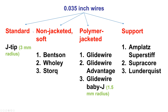There are four categories of 0.035-inch wires used to navigate from the periphery to the aortic cusp. First, there is the standard J-tip wire, which typically has a 3 mm radius. Second, there are soft non-jacketed wires such as the Benson, the Wholey, and the Storq, which are atraumatic and can advance through areas of tortuosity. Third, there are polymer-jacketed wires such as the GlideWire and GlideWire Advantage, or the Baby J for radial axis which has a tighter distal radius — very useful for tortuosity or significant lesions, although they carry a slightly increased risk of dissection.